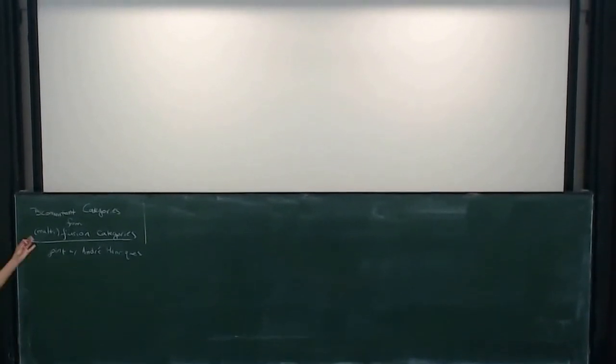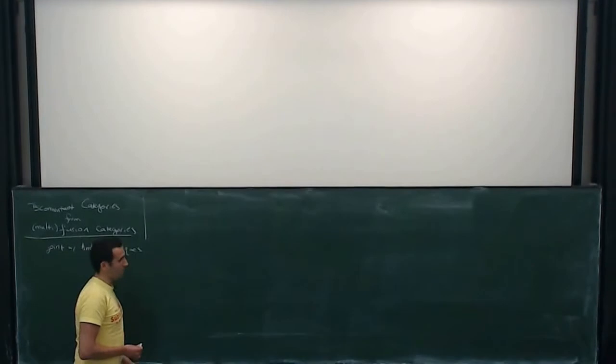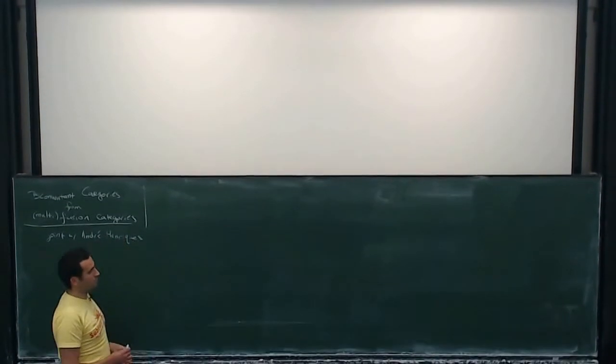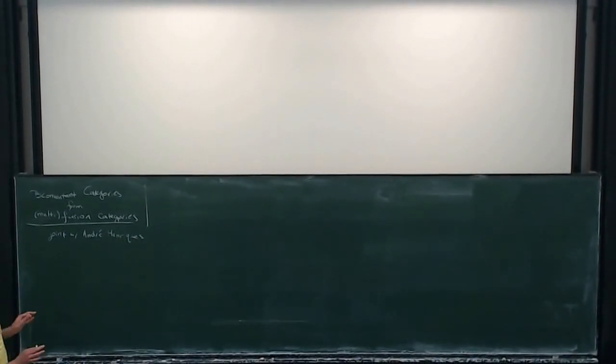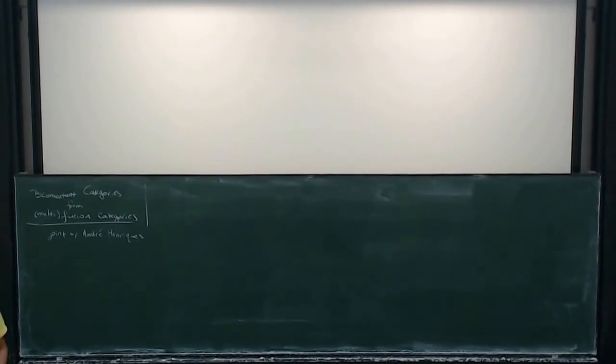Thank you very much to the organizers for inviting me to speak here. It's a real pleasure. Today I'm talking about bicommutant categories. This is joint work with André Enriquez, and the notion of a bicommutant category is due to André. It goes back just a few years. I'll talk a little bit about some of the motivation and this idea of a categorified von Neumann algebra. We'll start off with the analogy table, and then I'll tell you a little bit about André's original motivation for writing such a thing down.